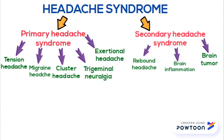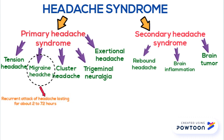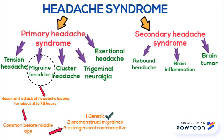Now let's discuss Migraine Headache. It is defined as a Recurrent Attack of Headache lasting for about 2 to 72 hours. It is common before Middle Age and the causes are Genetics, Premenstrual Migraine, and Migraine due to Oestrogen Oral Contraceptive Use.